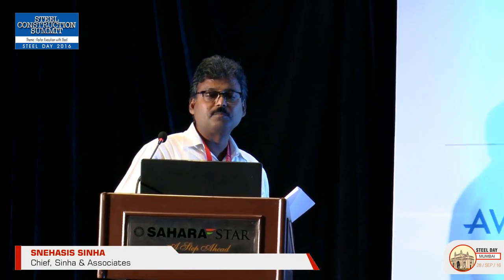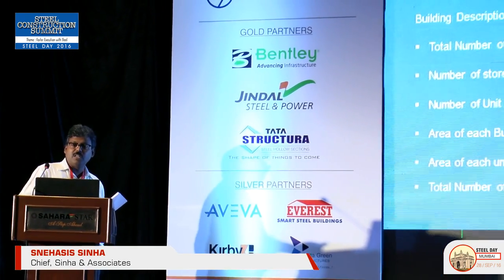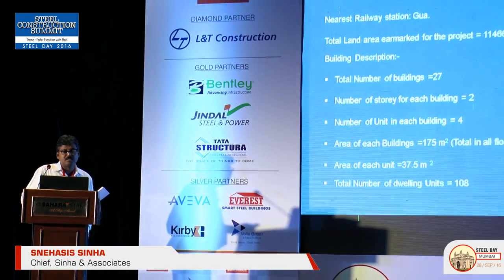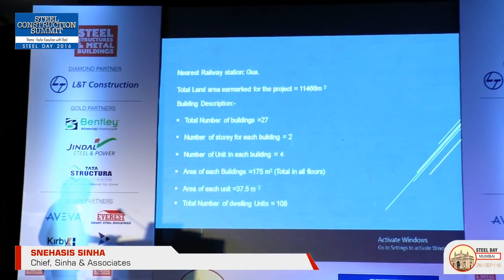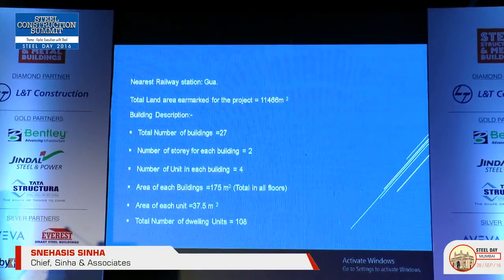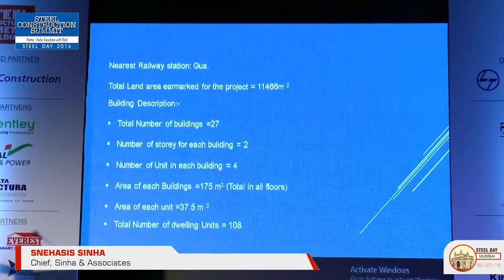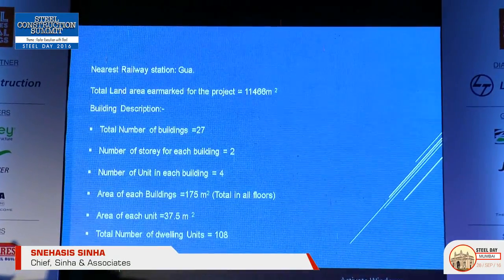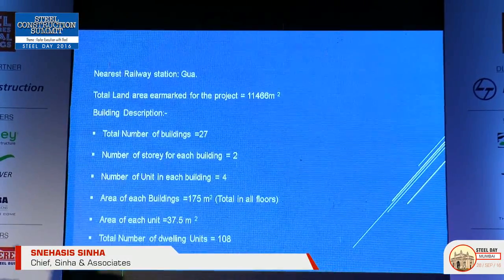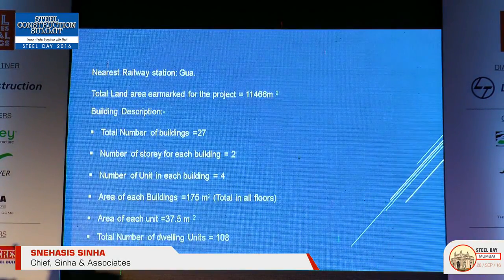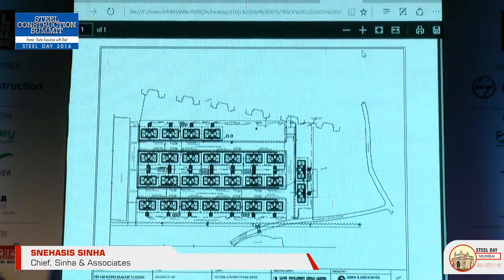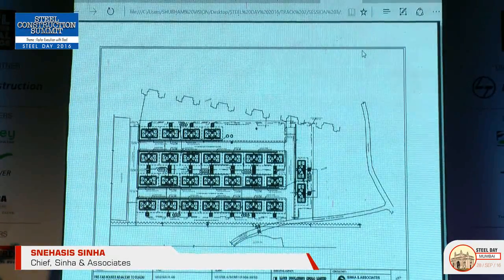Brief description of the project: the location is Guasai village in Jharkhand state, as shown on a Google Maps view. The nearest railway station is Gua. Total land area for the project is 11,466 square meters. Total number of buildings in the project is 27, each with 2 storeys and 4 units per building. Area of each building is 175 square meters, and each unit is 37 square meters. Total number of dwelling units is 108, with all 27 blocks arranged in a row.